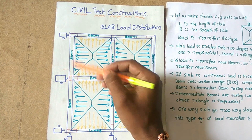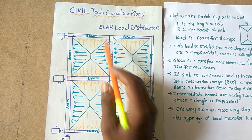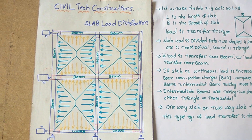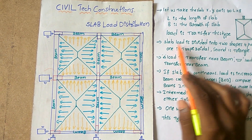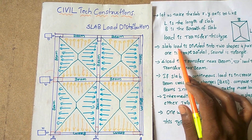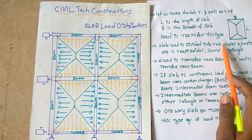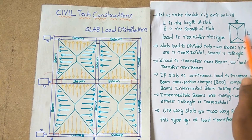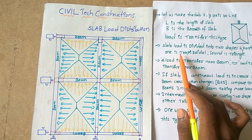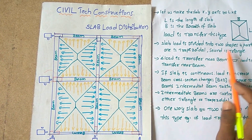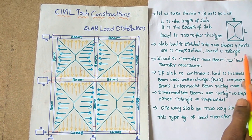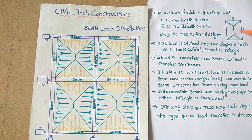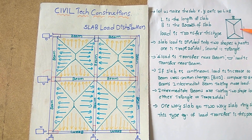This is L, this is B. This diagram shows the load is divided into two shapes and four parts. One is the trapezoidal and the second is the triangle. This is the trapezoidal shape, and this is the triangle.